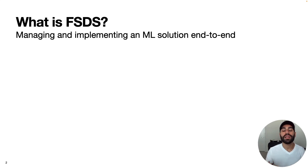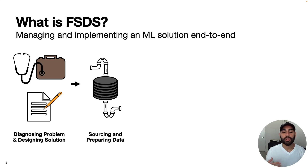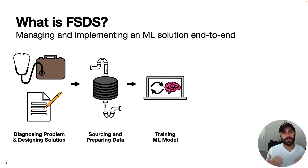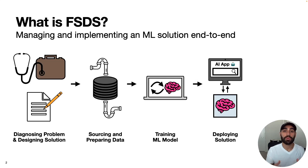A typical ML workflow might look something like this. You'll start by diagnosing the business problem and designing an ML solution to that problem. Next, with a design in mind, you'll move on to sourcing and preparing the data for solution development. Then you'll develop the solution — you'll train a machine learning model. And finally, you will deploy your solution, integrating that machine learning model into existing workflows or into a product.